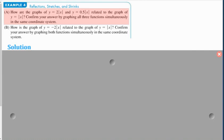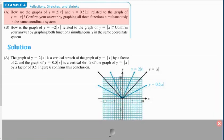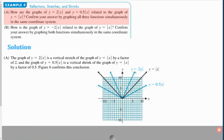So here's an example. How are the graphs of y equals 2 times the absolute value of x and y equals 0.5 times the absolute value of x related to the graph of y equals the absolute value of x? And you can see that y equals 2 times the absolute value of x gives you a stretch, a vertical stretch. It makes the graph climb faster, where if you multiply it by 0.5, it shrinks the graph vertically or flattens it out.